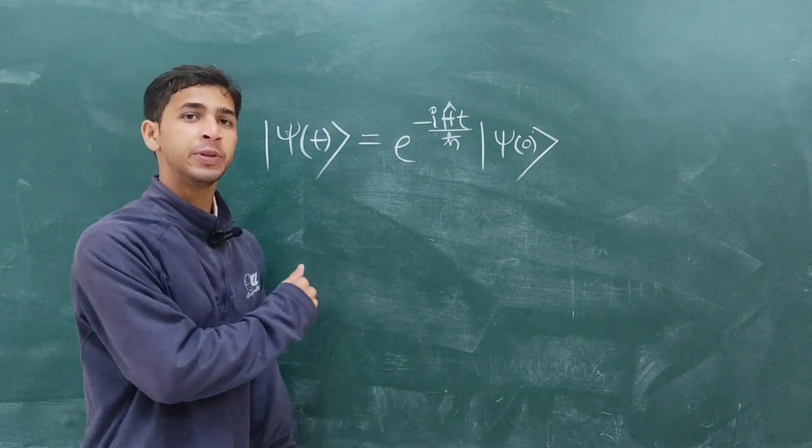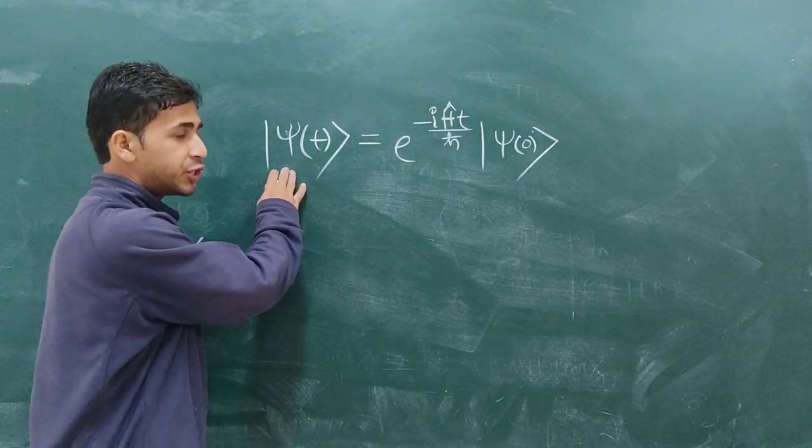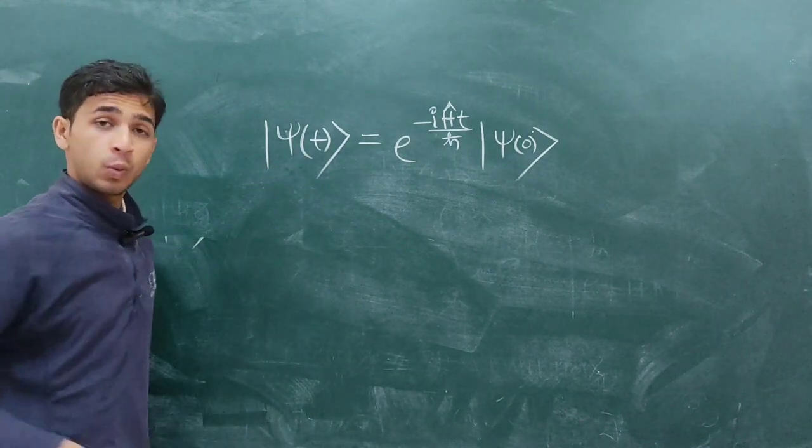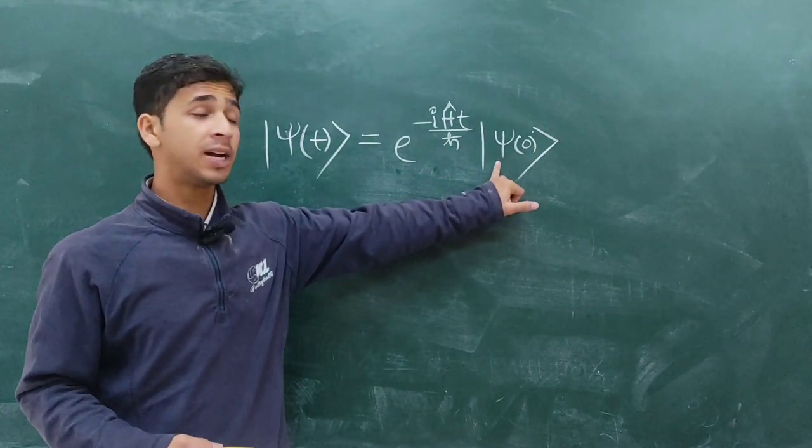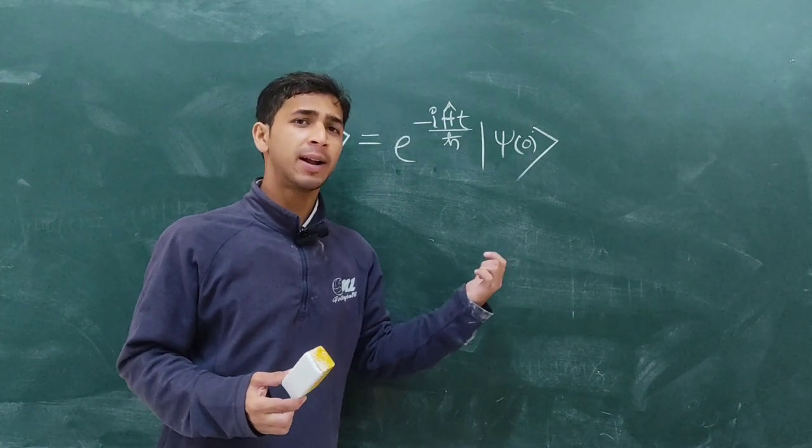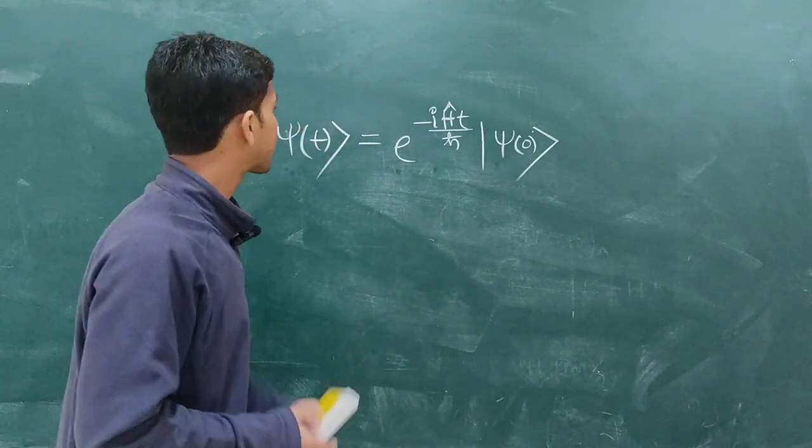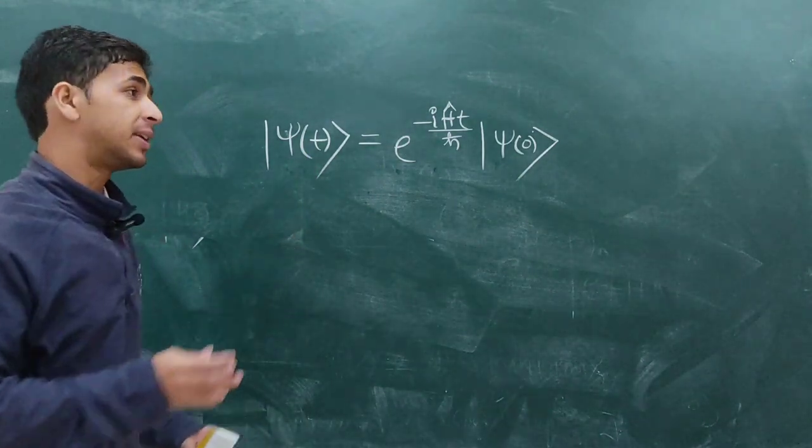From this equation we can easily see that the state at time t will arise after operating this operator on the state at time 0, means at time t₀. So this is the Schrödinger picture.